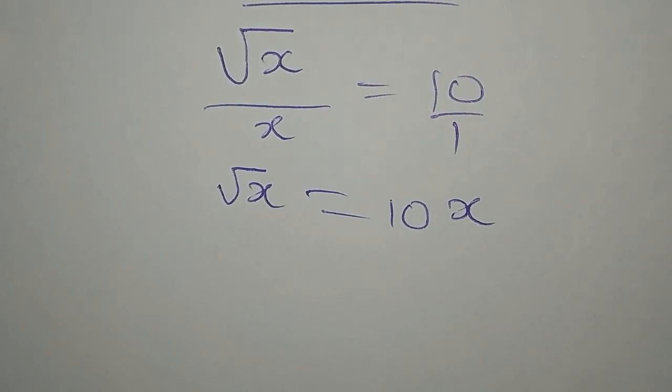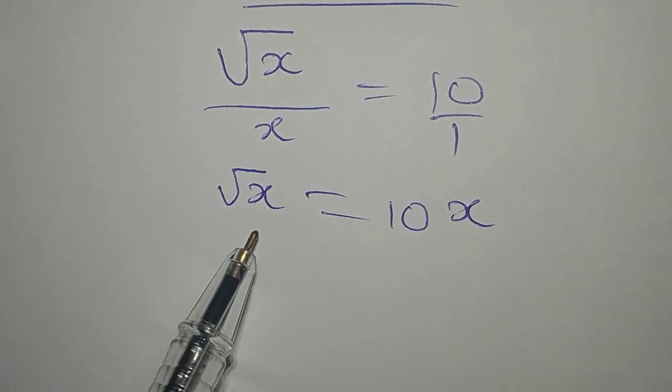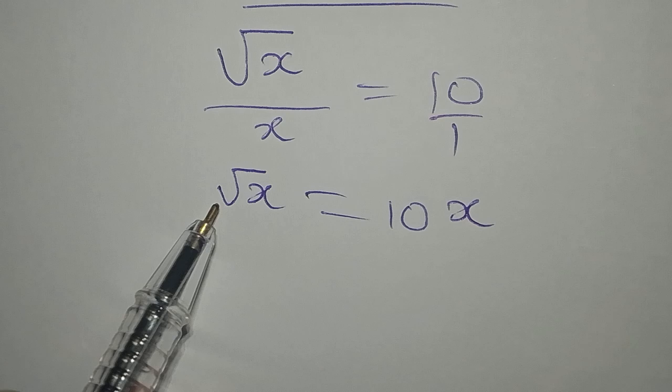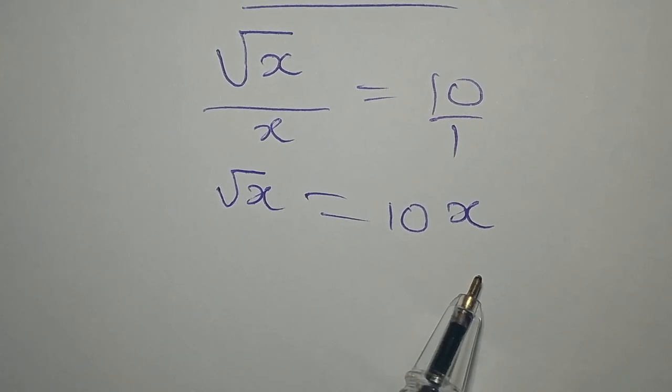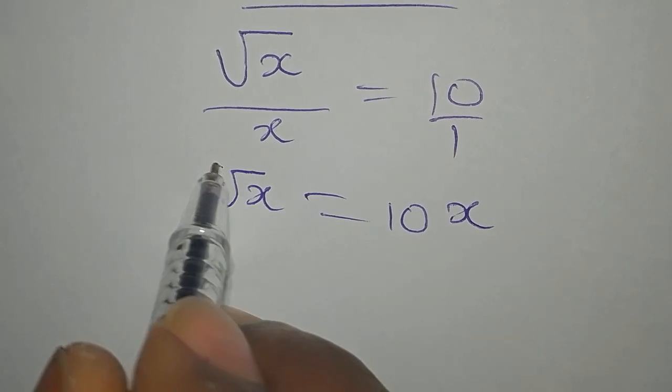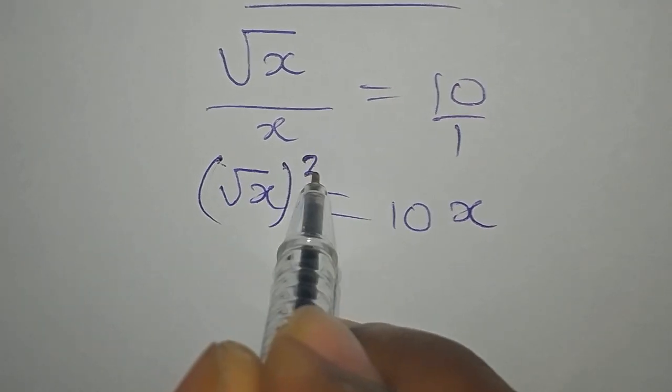And since we are looking for the value of x, we do not divide both sides by x. We will rather square both sides so that this square root can be eliminated first.